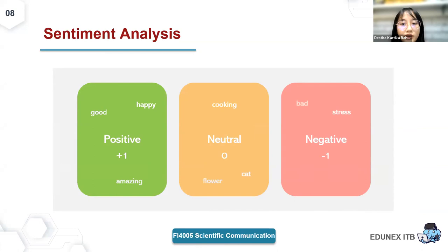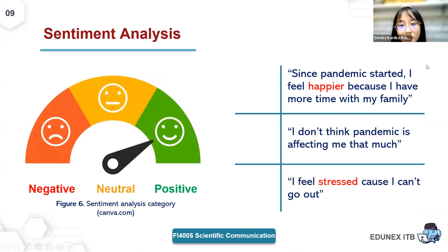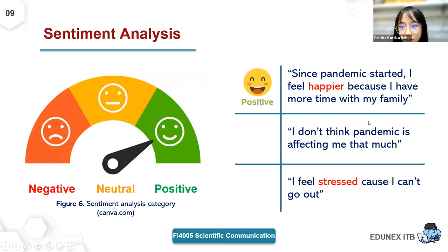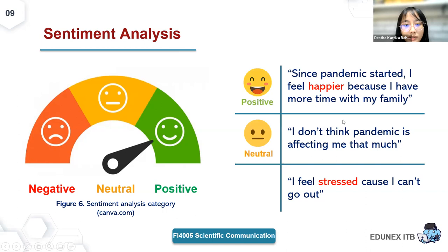Let's look at three example sentences. First: 'Since the pandemic started, I feel happier because I have more time with my family.' The keyword 'happier' places this in the positive category. Second: 'I don't think the pandemic is affecting me that much' — no positive or negative keywords, so it is neutral. Third: 'I feel stressed because I cannot go out' — the word 'stressed' indicates this is a negative sentence.